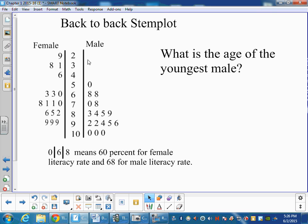So here, the age of the youngest male, I just wanted to make it certain that people knew that this was 29 in the back-to-back stem plot. And then you would make a key that looks like this, where you have three numbers, saying that 60 is for female literacy and 68 is for male literacy.